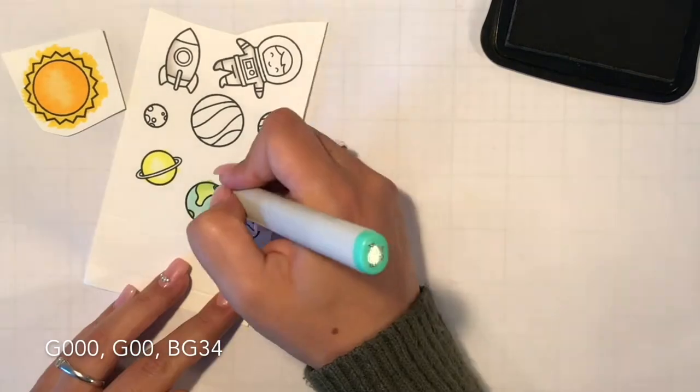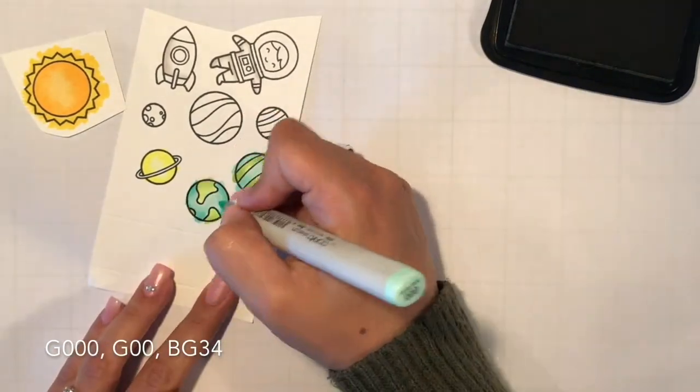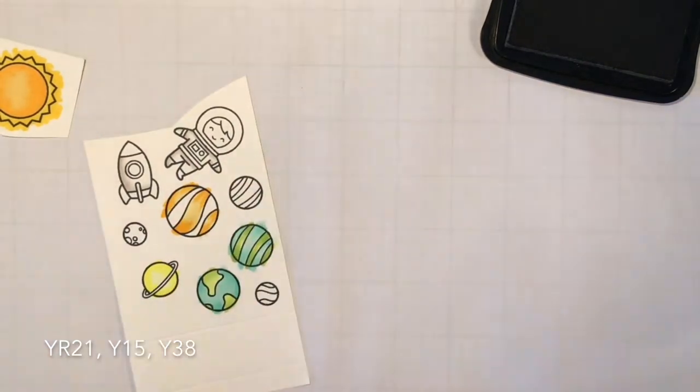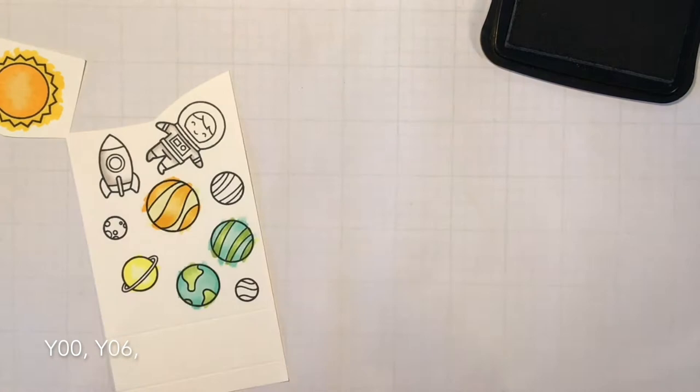But first things first, I started with stamping my images on white paper. I used Memento Tuxedo Black Ink and Whisper White Paper from Stampin' Up because I want to use my Copic markers today.